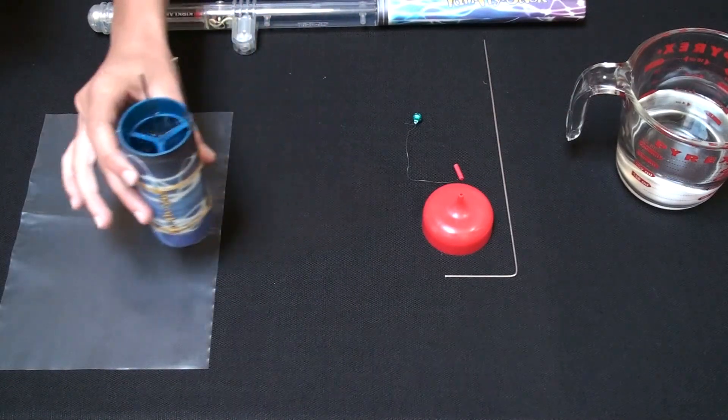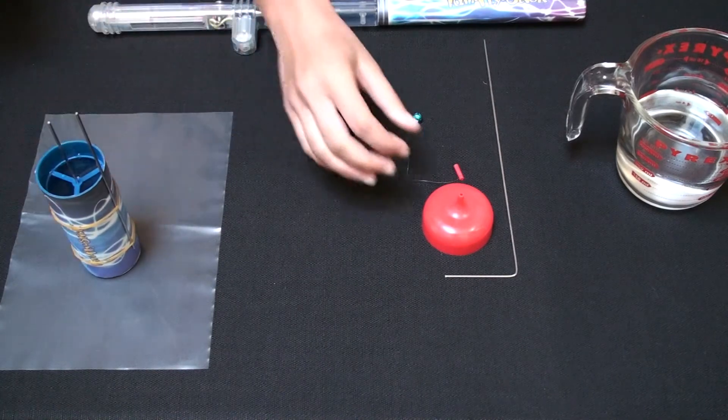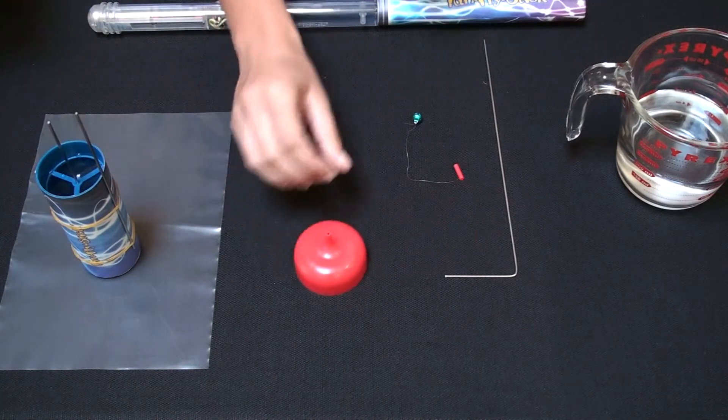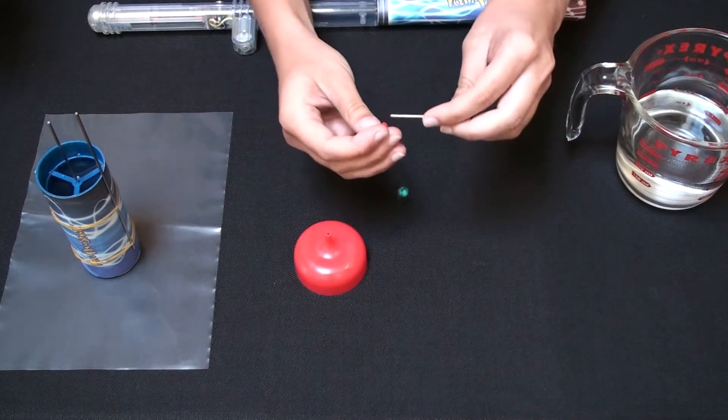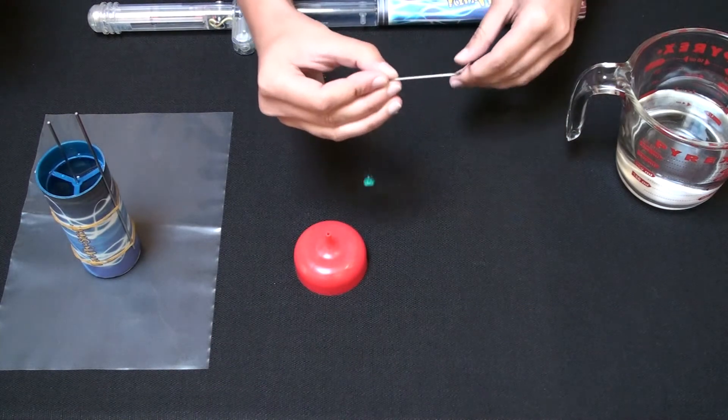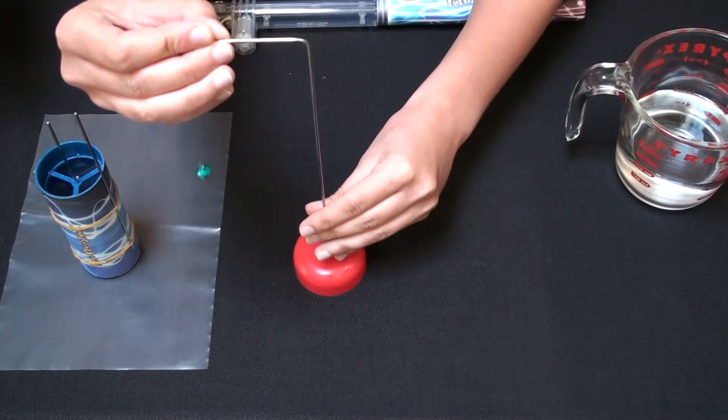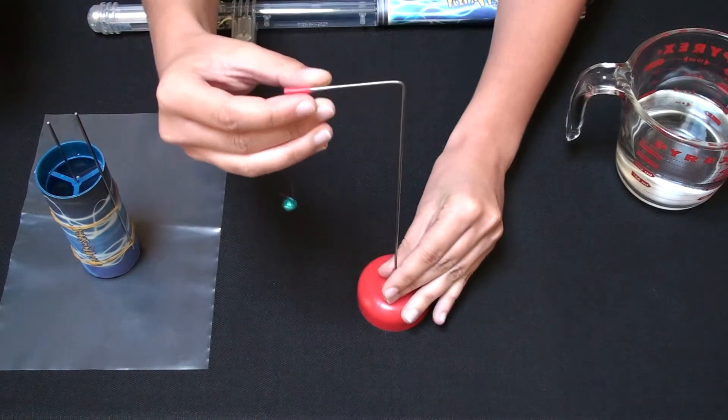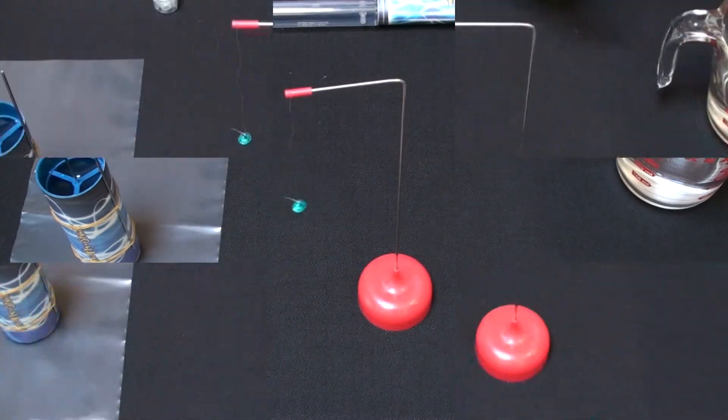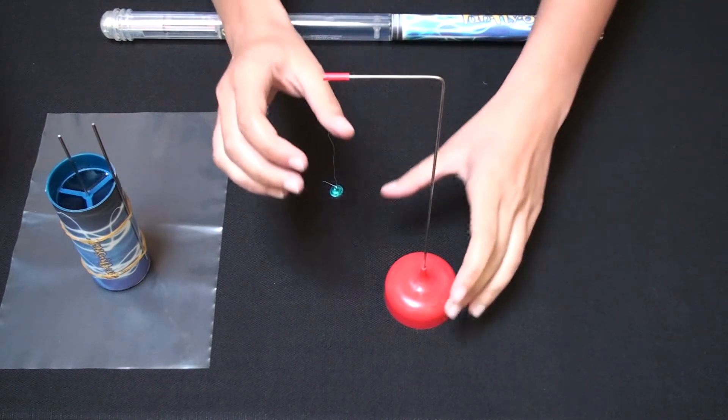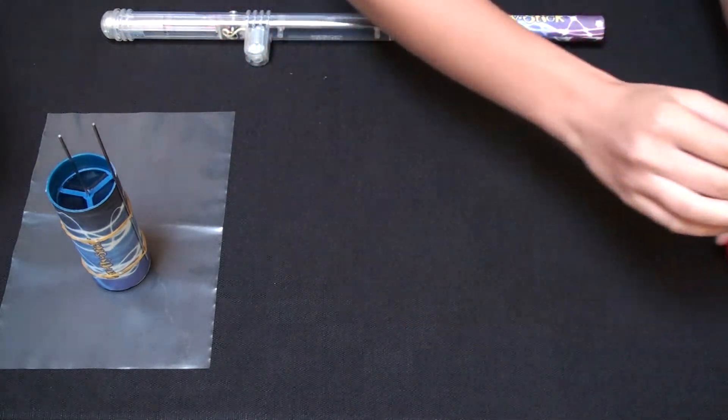Put the assembled Leyden jar on the plastic film. Attach the bead on the short fishing line to the end of the pin hanger. Insert the pin hanger into the plastic pin holder. Set the assembled bead and pin hanger to the side.